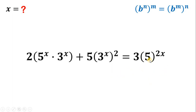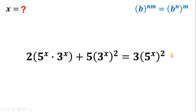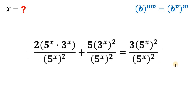Now, how about the expression 5 raised to 2x? Take note that if we have b raised to n times m, it is equivalent to b raised to n raised to the power of m. Therefore, 5 raised to 2x can be written as 5 raised to x, quantity squared. What we're going to do is divide all terms by 5 raised to x, quantity squared. The right-hand side divided by that becomes simply 1, so that term is just 3.